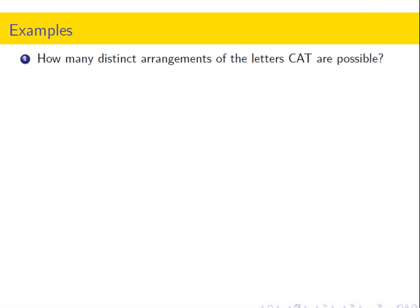Let's look at some simple examples. How many distinct arrangements of the letters CAT are possible? We have three letters and three slots. This is just 3 factorial. We have three choices for the first slot, two for the second, and one for the last. So 3 × 2 × 1 equals 3 factorial, which is 6.